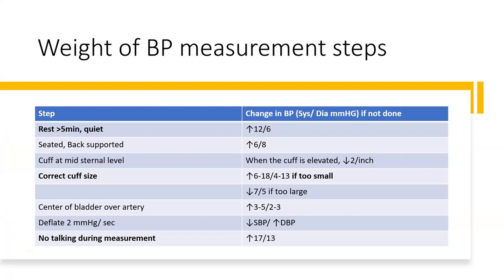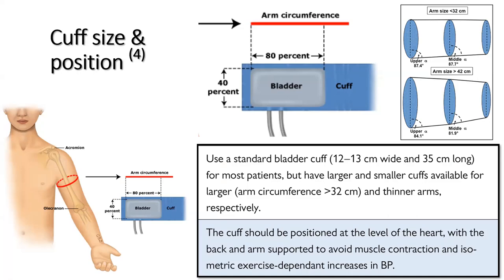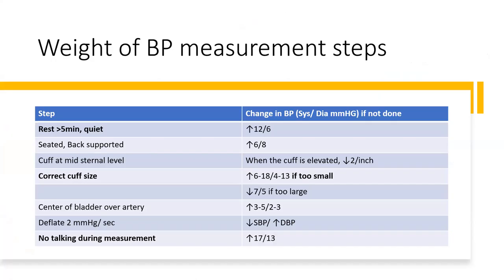Using an incorrect cuff size — especially if too small — can raise systolic BP by 6 to 18 mmHg. These three steps — ensuring the patient is not talking, has rested for five minutes, and that the correct cuff size is used — are the most impactful when measuring blood pressure. In Mr. S, BP was measured in both arms with no arm-to-arm difference and was repeated at 20 minutes, confirming Grade 1 hypertension.